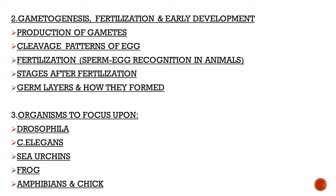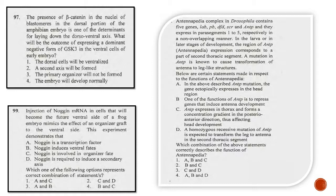There are specific organisms you must focus on: Drosophila — questions definitely come from here; C. elegans; sea urchins; and frog/amphibians, which have repeatedly appeared in Section C, especially related to the dorsal lip of the blastopore in early amphibian development. For Drosophila, study its embryo development — gap genes, segmentation genes, and homeotic genes. Questions are asked in experimental form: if a gene is mutated or over-activated, what will be the ultimate consequence?